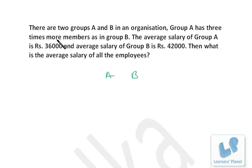Group A has three times more members than group B, so the ratio is 3 to 1. The average salary of group A is Rs. 36,000 and the average salary of group B is Rs. 42,000. What is the average salary of all the employees?